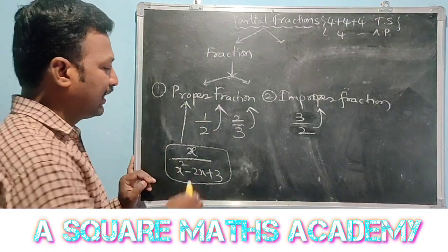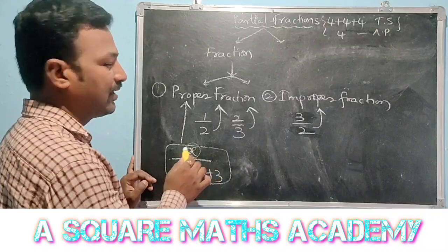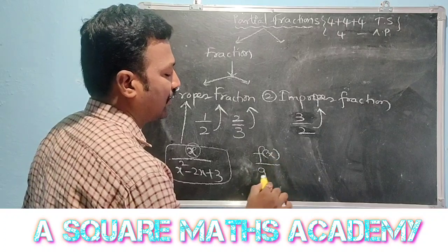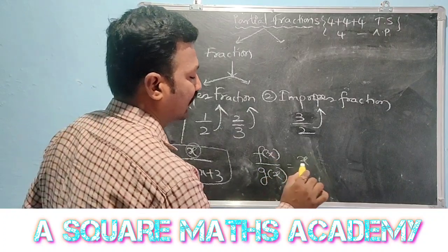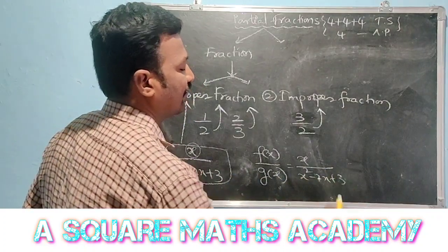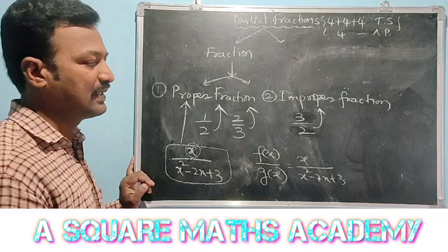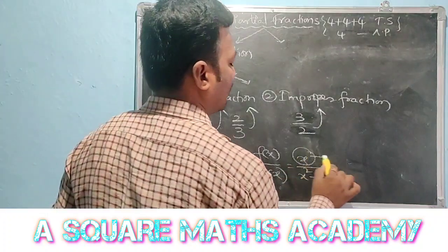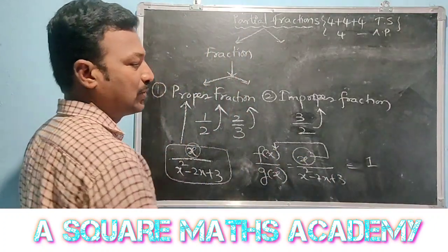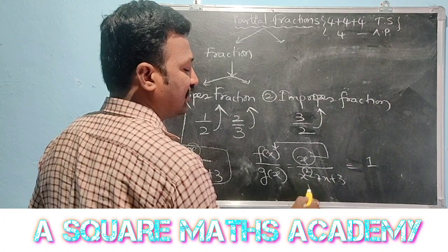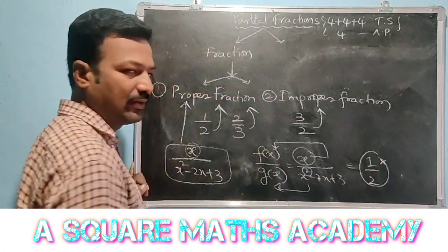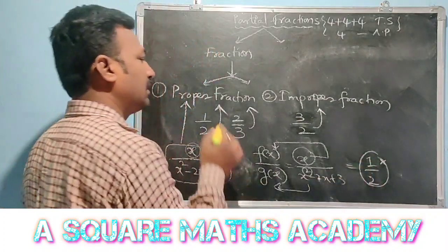Consider f of x by g of x. Here f of x equals x, and g of x equals x squared minus 2x plus 3. So the fraction is x by x squared minus 2x plus 3. The degree of f of x is 1, and the degree of g of x is 2. Since 1 is less than 2, this belongs to a proper fraction.